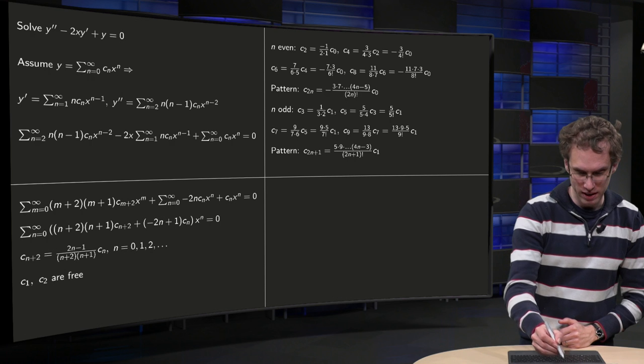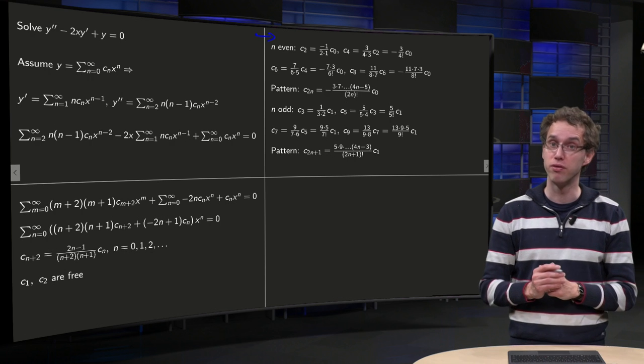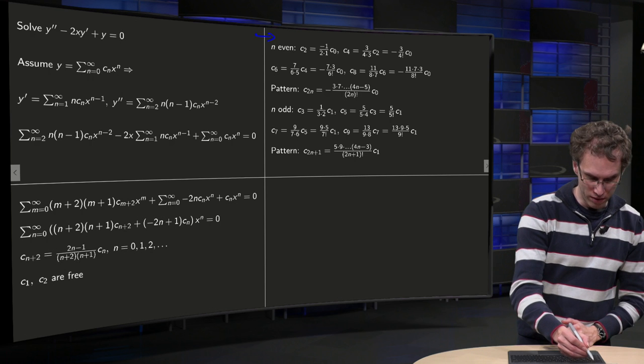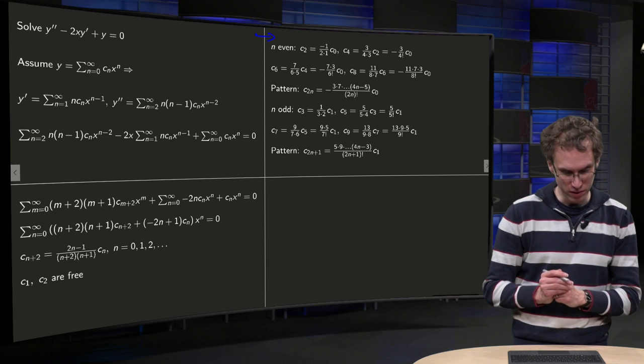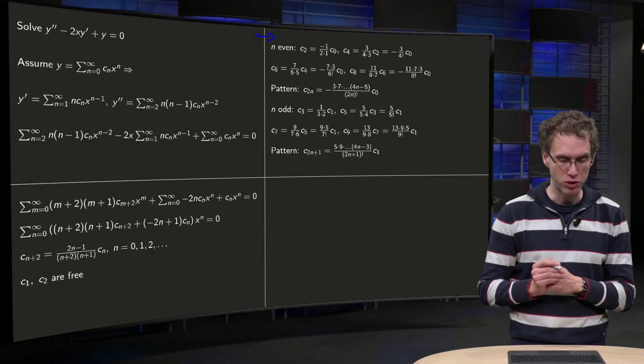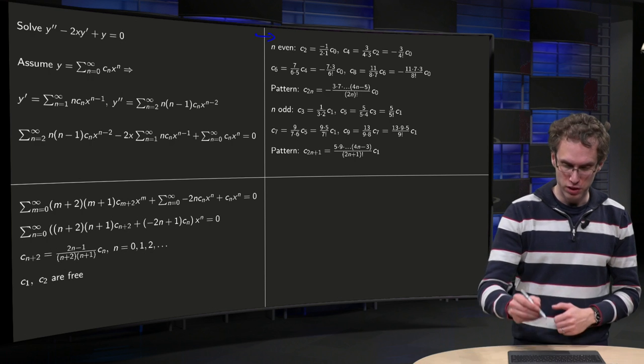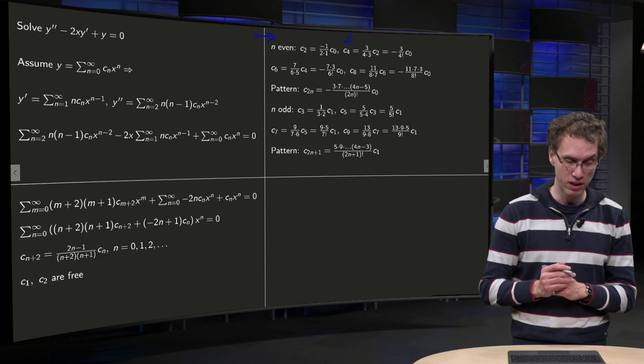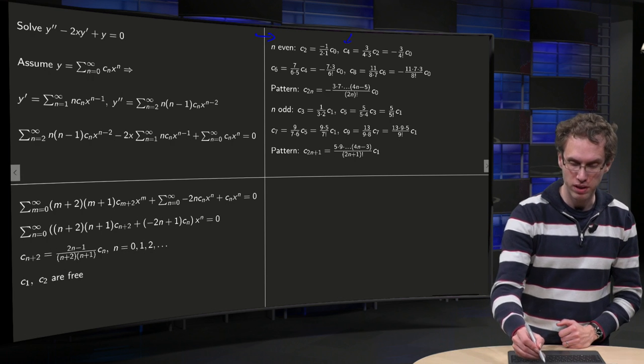So let's start with even, so take c0 free. Then c2 equals, with n = 0, you get -1/(2×1) times c0. If we plug in n = 2, we get c4, and then we get 2n - 1, so 3, divided by 4×3 times c2.